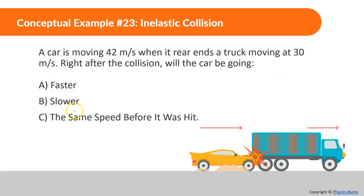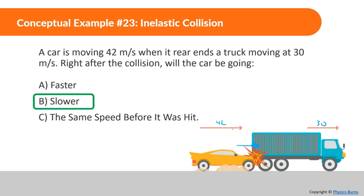Conceptual Example 23: A car is moving at 42 meters per second when it rear-ends a truck moving at 30 meters per second. Will the car be going A) faster, B) slower, or C) the same speed after the collision? The car is essentially hitting a slowly moving wall, so it is definitely going to be going slower.